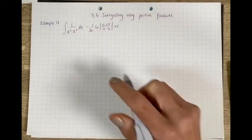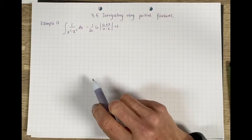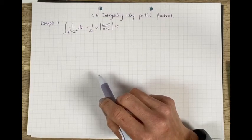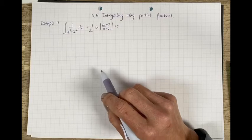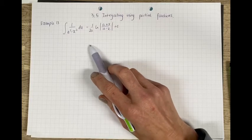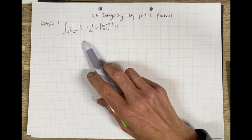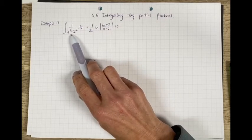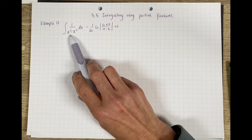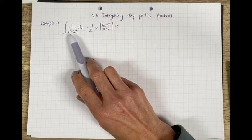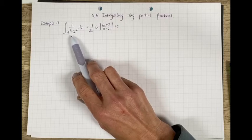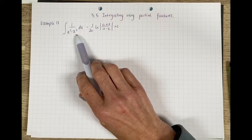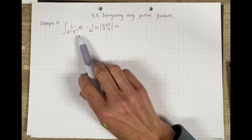Section 3.5, integrating using partial fractions, example 13. This is the result that you can use if you have an expression like this. Make sure you don't get muddled up - it looks very similar to arctan, but arctan has a squared plus x squared. So make sure you don't mix up the two integrals.